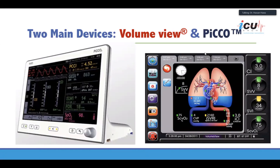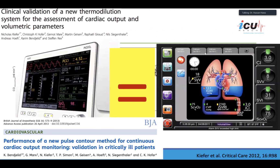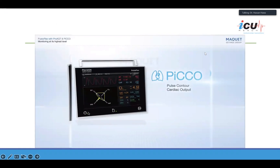There are two main devices on the market, and studies have shown they are equal in their ability to give very close readings. Device components include a central line — either upper body or femoral — and a special arterial line with a thermostat lead attached. You inject cold saline through this sensor, and as the saline goes into the circulation, the temperature change is sensed at the femoral arterial catheter.